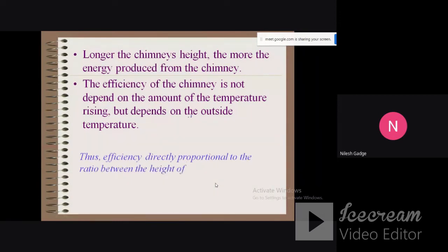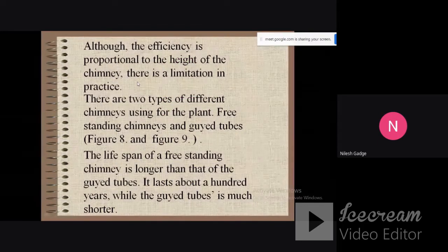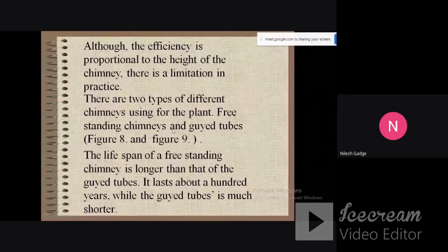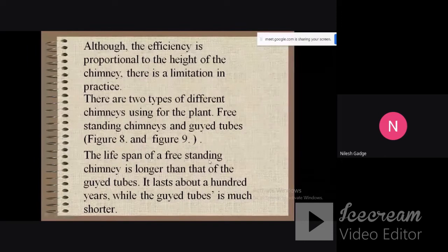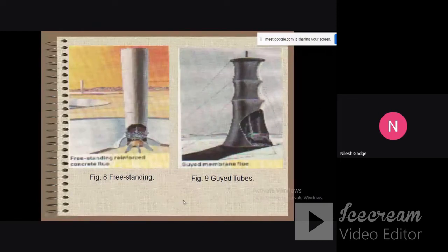The efficiency is directly proportional to the ratio between the height of the chimney and outside temperature. Although the efficiency is proportional to the height of the chimney, there is a limitation in practice. There are two types of different chimneys used for the plant: freestanding chimneys and guide tubes. The lifespan of freestanding chimneys is longer than that of guide tubes - it lasts about 100 years.